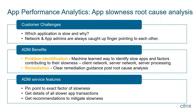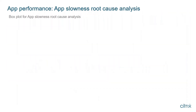ADM Service has specific features: pointing to the exact factor of slowness, providing details of all slower app transactions, and giving recommendations to mitigate slowness. Now let's understand the methodology and algorithm used for this.